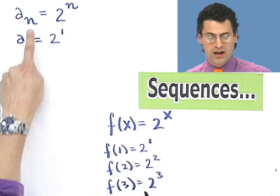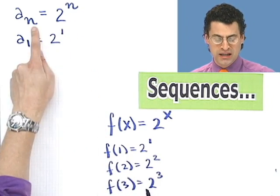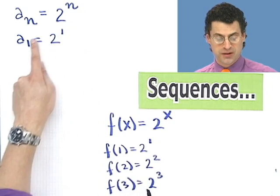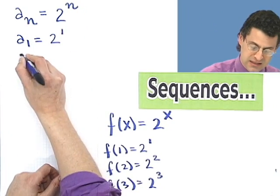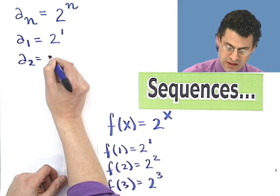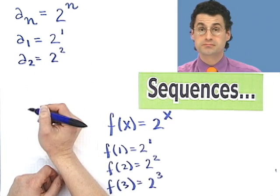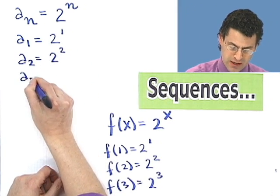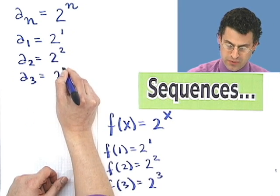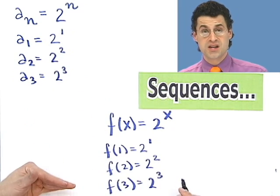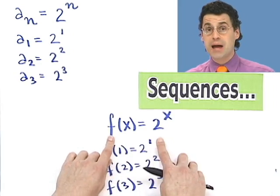And the answer would be 2 to the 1. Wherever I see n, I replace that 1 in for the n's. So I see 1 here, n, I put it here. a sub 2 would equal 2 to the 2. a sub 3 would equal 2 cubed, and so forth.